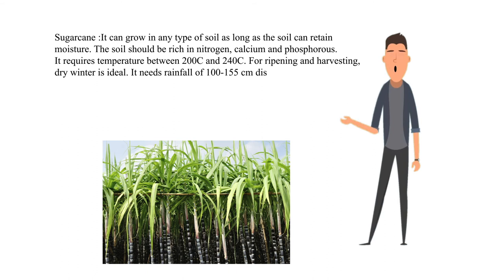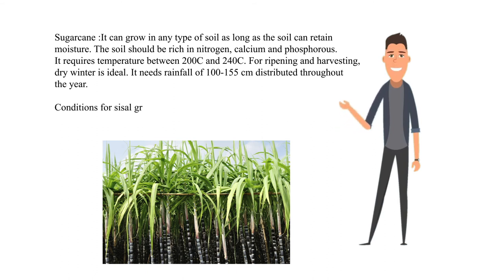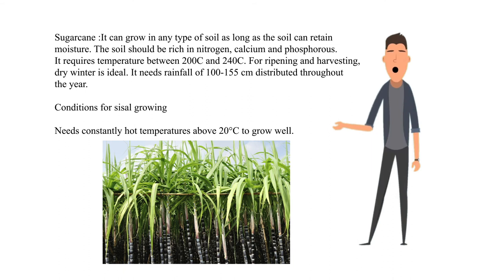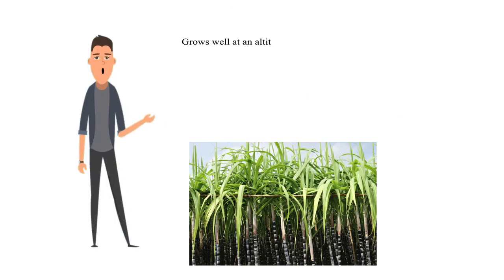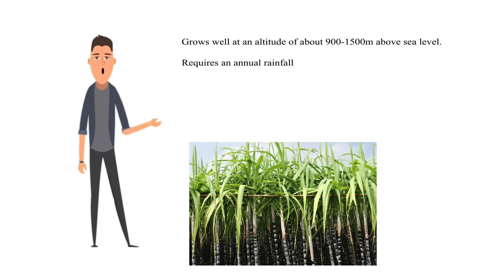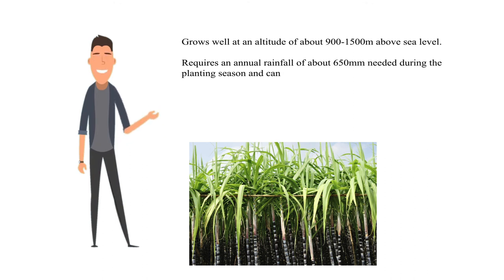It needs rainfall of 100 to 155 centimeters distributed throughout the year. Conditions for sisal growing: it needs constantly hot temperatures above 20 degrees Celsius to grow well. Grows well at an altitude of about 900 to 1500 meters above sea level. Requires an annual rainfall of about 650 millimeters needed during the planting season and can also tolerate drought. A long dry season is needed for harvesting the crop.